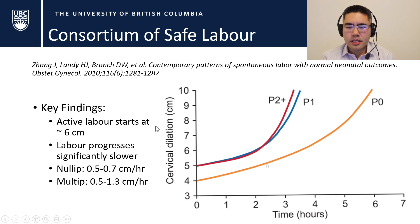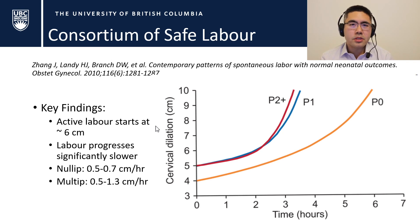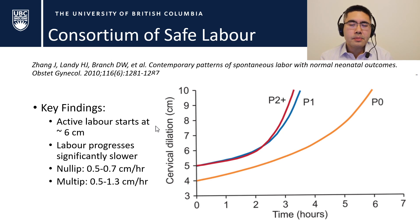First, previously you've learned that active labor of the first stage starts at 4 centimeters, and that may not actually be correct. When we look at the data, it's not until people hit about 6 centimeters that we start seeing that rapid rise — before 6 centimeters things can actually take a fair bit longer. Second, people progressed a lot slower. On average, first-time mums progress between 0.5 to 0.7 centimeters an hour, and for people who've had previous babies it's 0.5 to 1.3 — a far cry from Friedman's 2 and 3 centimeters per hour respectively.